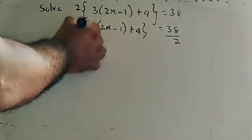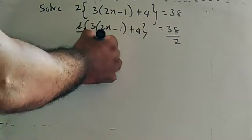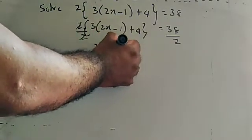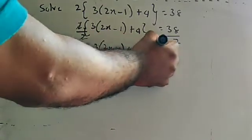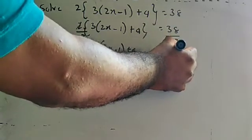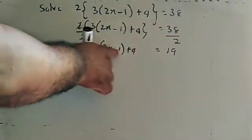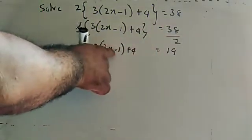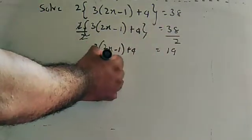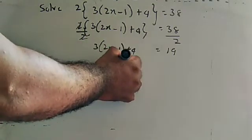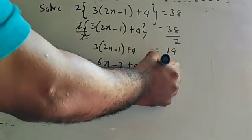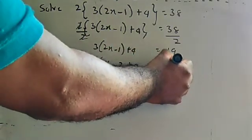Now remove the brackets. Three into 2x is 6x, three into 1 is minus 3, plus 4, is equal to 19. Now you can see like terms: minus 3 plus 4 equals plus 1. So 6x plus 1 is equal to 19.